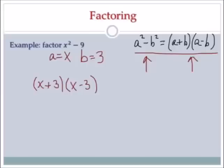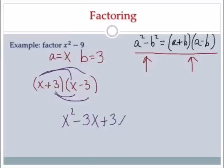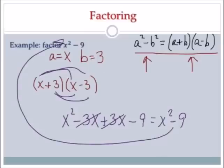I think that's my answer, but I want to check it first by FOILing. x times x is x squared. x times negative 3 is negative 3x. Then I move to the 3: 3 times x is 3x, and 3 times negative 3 is negative 9. Negative 3x plus 3x go to 0, so I'm left with x squared minus 9, which is what I started with. So that means (x plus 3)(x minus 3) is my final answer.